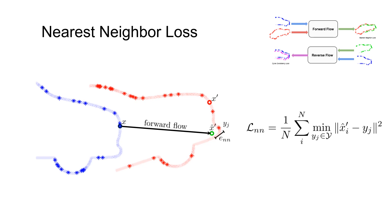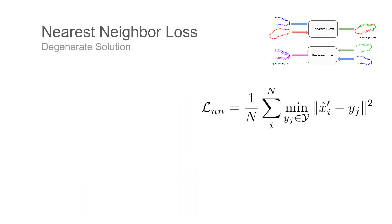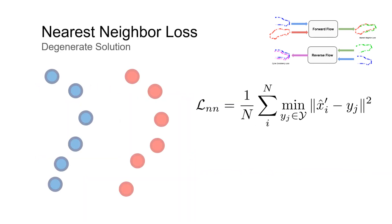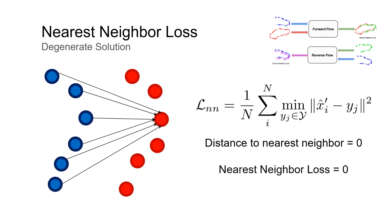This nearest neighbor loss brings the projected points closer to the surfaces in the target frame. By itself, this loss is not sufficient for learning flow. For example, if all the points are mapped to a single point in the target frame, this would lead to a nearest neighbor distance of zero, and a perfectly optimized loss.